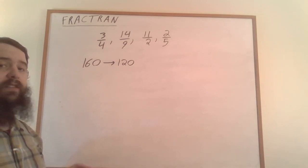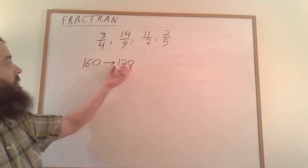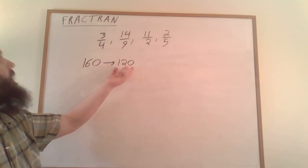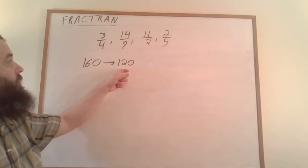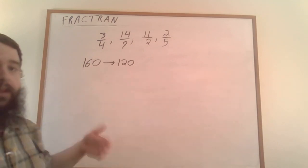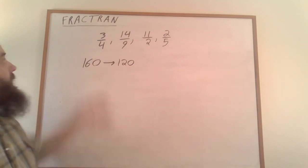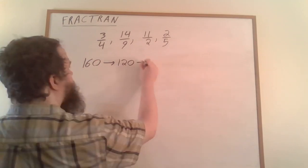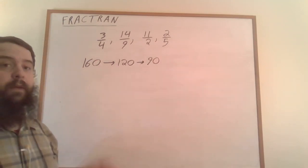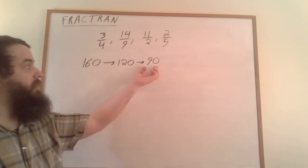We now try to apply our list of fractions again, this time to 120. What is the first fraction we can multiply 120 by to keep it natural? Again, 120 is divisible by 4, so we multiply by 3/4 to get 90. Now the program state is 90.